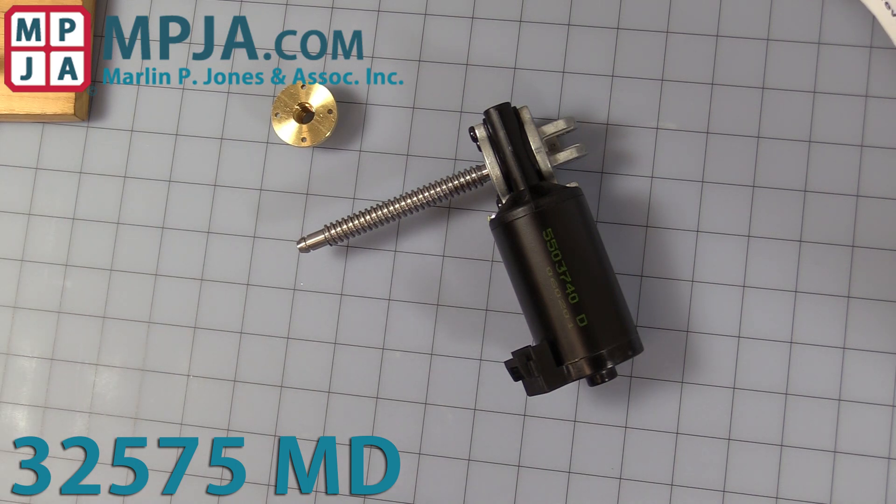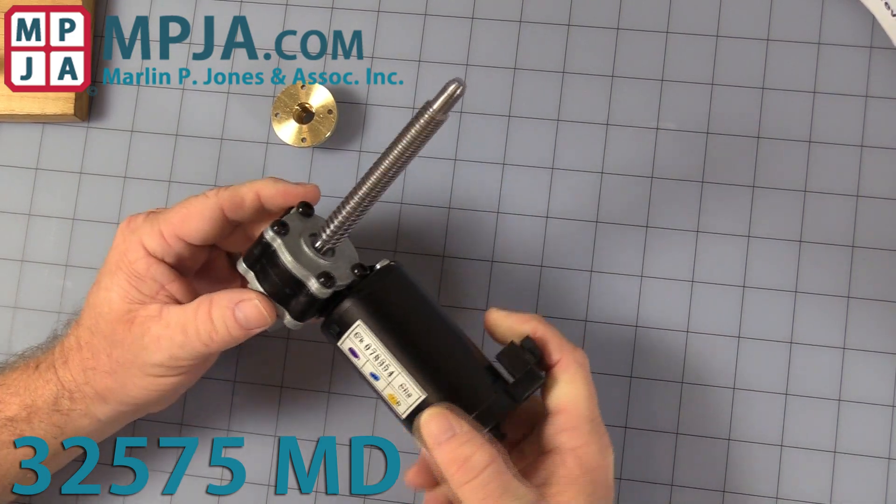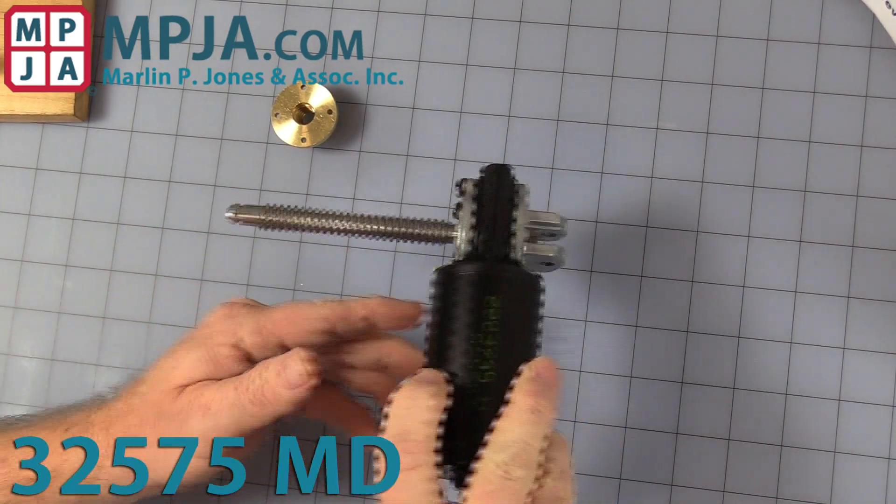Hello, today's video is on stock number 32575MD. We're making a video of it today because we've been having a lot of people asking for a mechanical drawing of the part. And it simply isn't available because it is a surplus part. So this video is here to give you a good visual on how it looks, all the different angles and such.